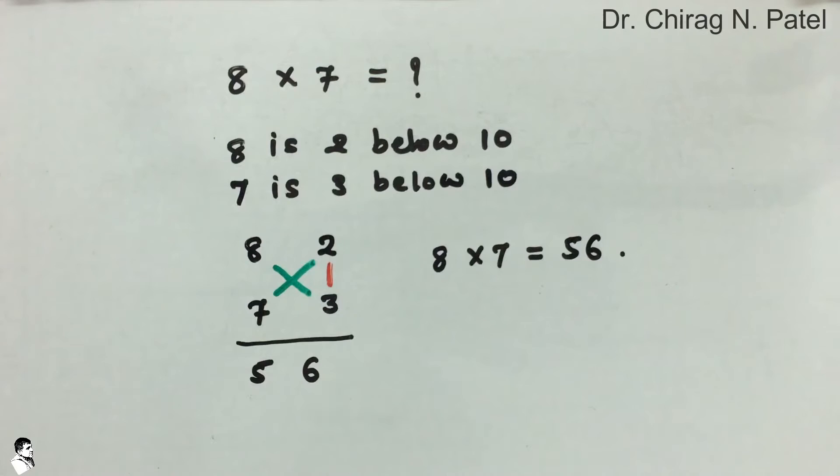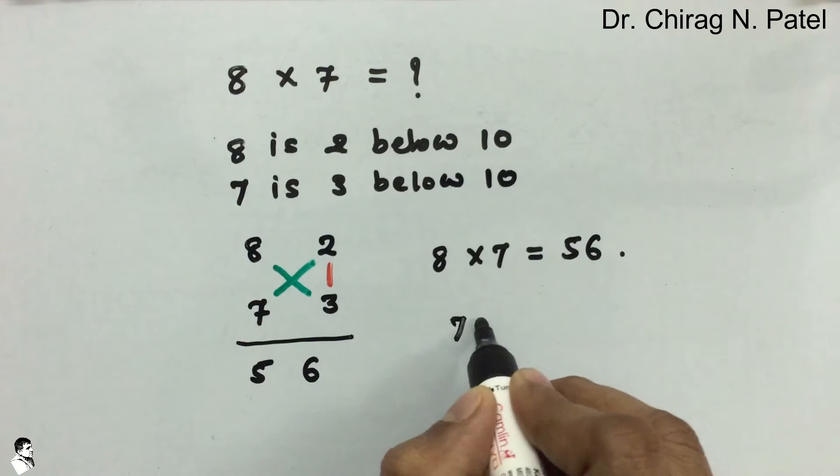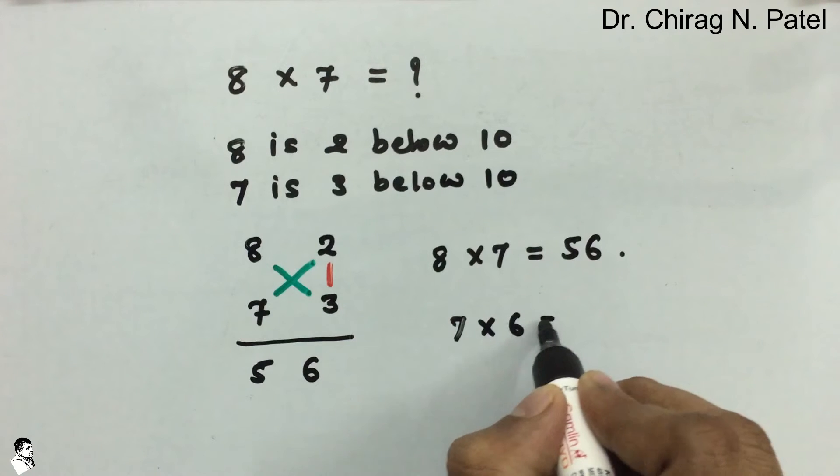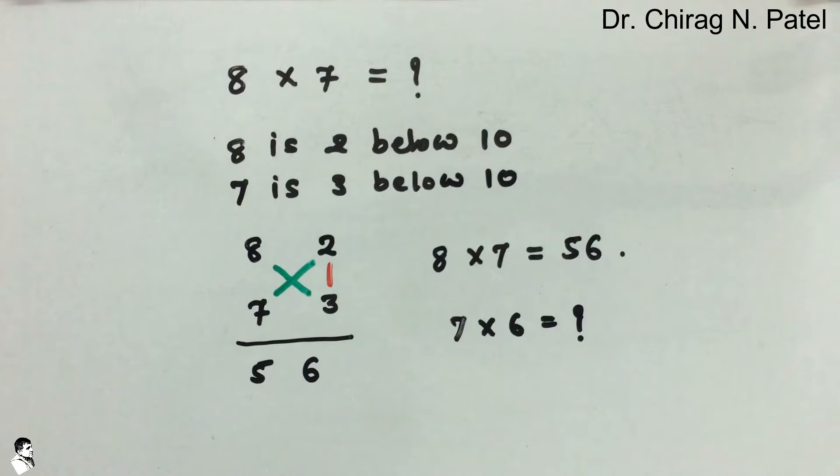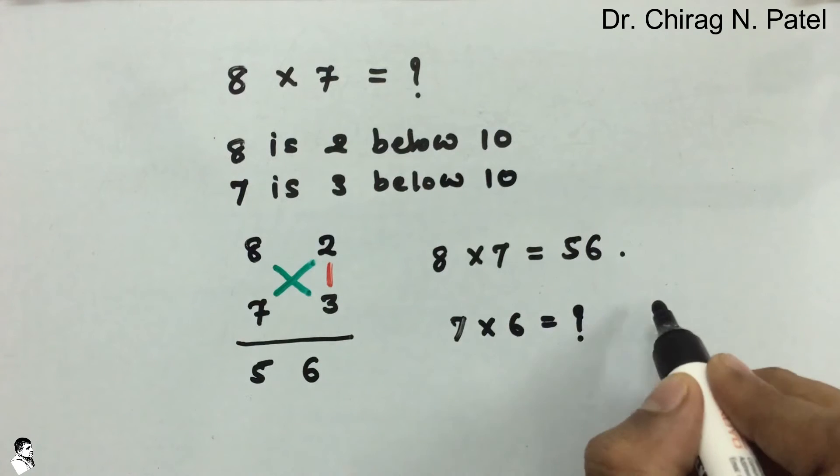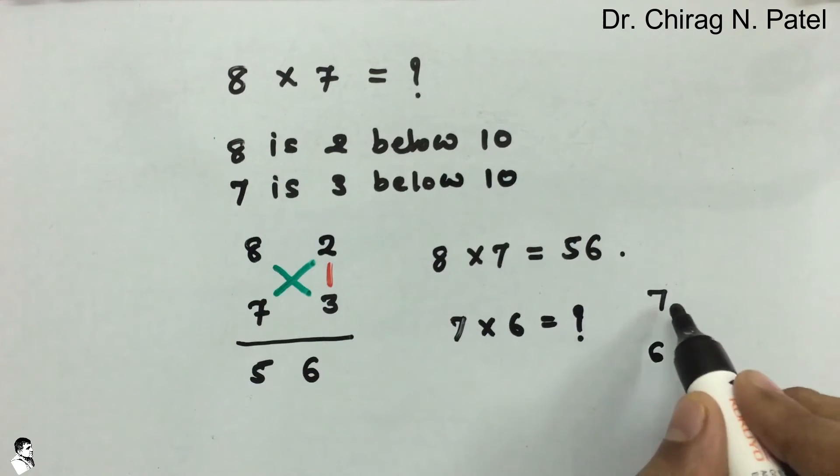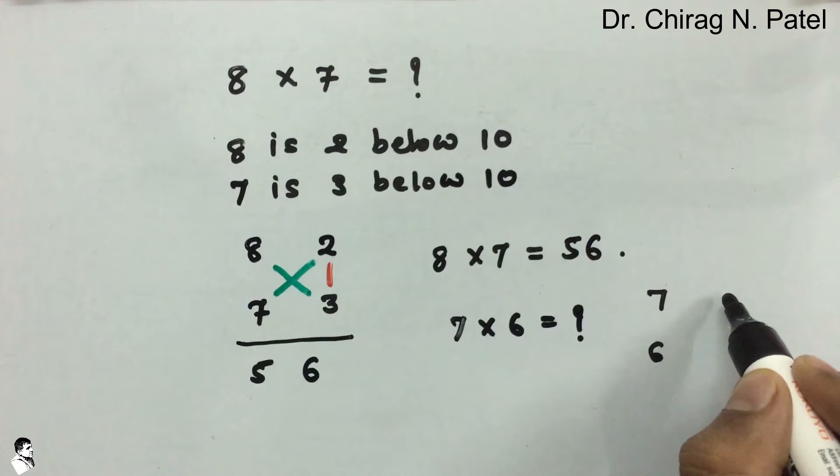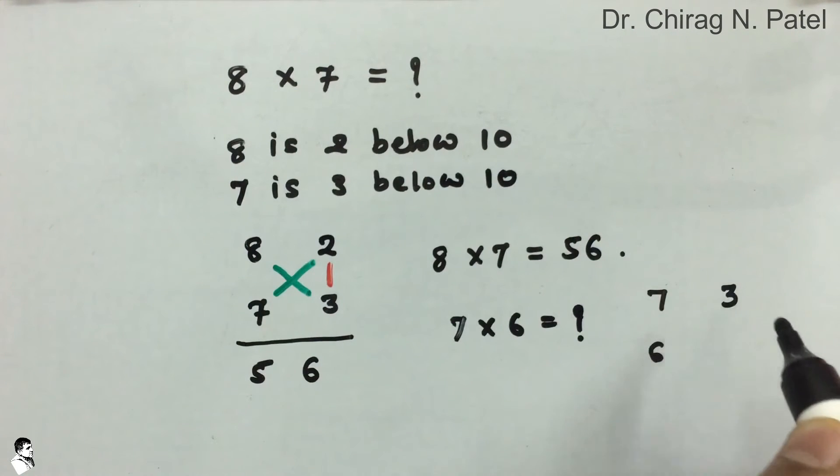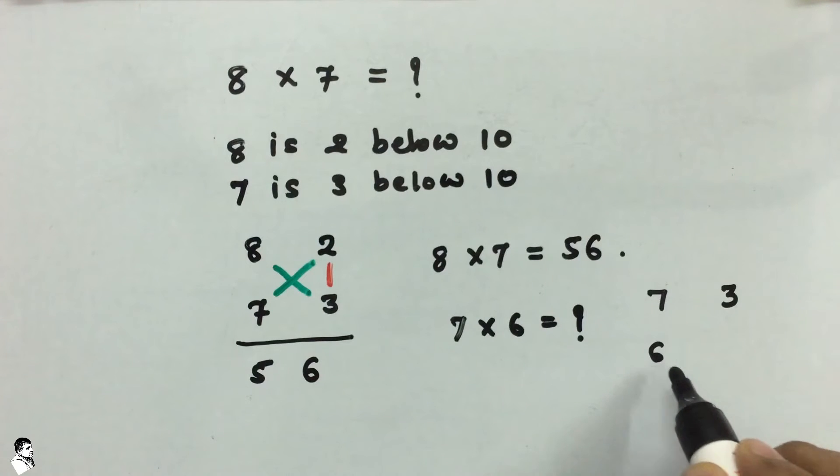Now if you take another example that is 7 into 6, what will be the answer? So now you quickly write down into a notation. We just write down first the given figures. Now 7 is 3 below 10 and 6 is 4 below 10.